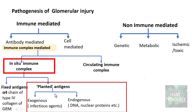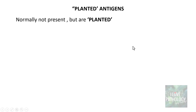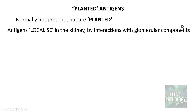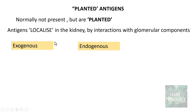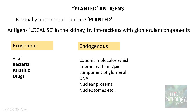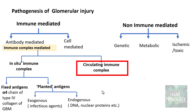Planted antigens are not normally present but are planted onto the glomerular basement membrane because they localize in the kidney by interactions with various glomerular components. These can be exogenous antigens such as various infectious particles — viral, bacterial, parasitic, and even drugs — or endogenous antigens including cationic molecules which interact with the anionic component of the glomeruli, such as DNA components, nuclear proteins, and nucleosomes.